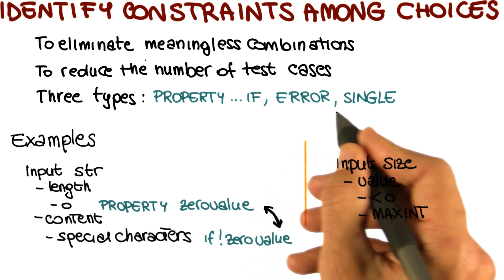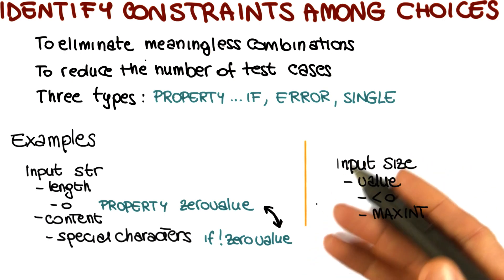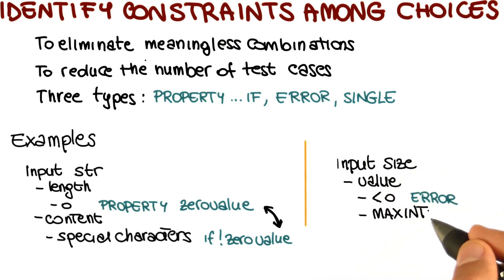Now let's look at the case in which we might want to use an error property. For instance, when we look at the category value for the input size, the choice value less than zero is an erroneous choice. It's a choice we selected to test a possibly erroneous situation. So we can mark this as an error property. What that means is that when generating possible combinations of choices, we will consider this only once, because we assume we just want to test this error condition once.